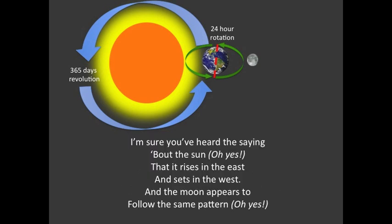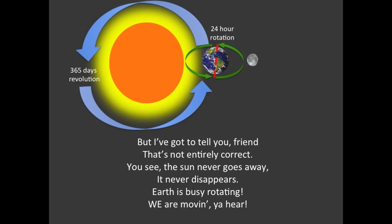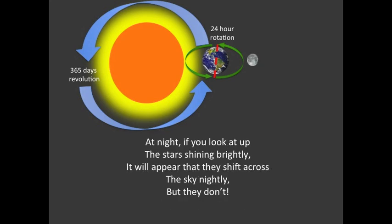I'm sure you've heard the saying that the sun rises in the east and sets in the west, and the moon appears to follow the same pattern. But that's not entirely correct — the sun never goes away, it never disappears. Earth is busy rotating; we are moving.